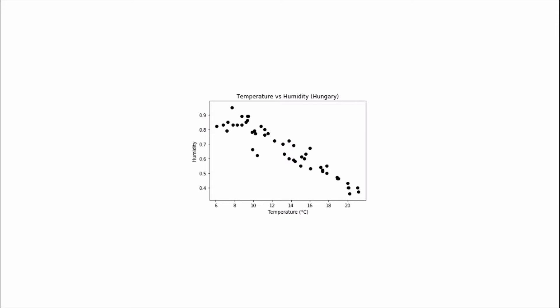Let's now give an overview of linear regression by looking at a real-life example of how it's used to predict humidity values in Hungary given a particular temperature. The job of linear regression here is to find a mathematical relationship between humidity and temperature by finding what's called the regression line, which gives a general trend: as temperature increases, humidity decreases. We can use this line to make predictions, where temperature is our input x and humidity is our output y.